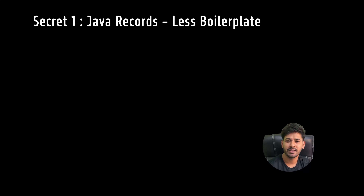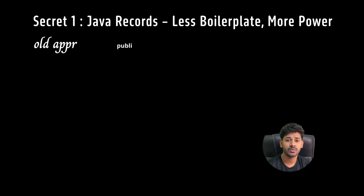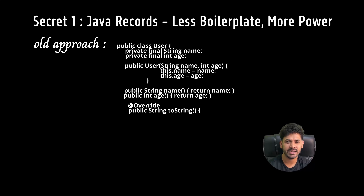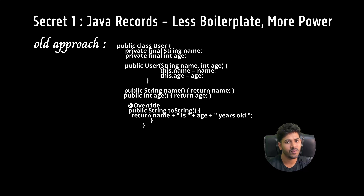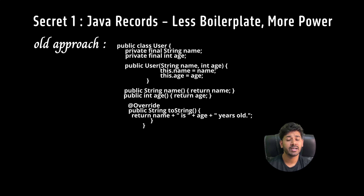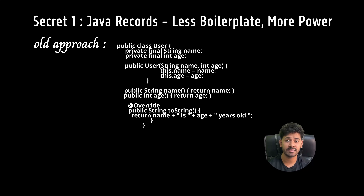Secret one: Java Records. Say goodbye to boilerplate — creating POJOs with getters, setters, constructors, toString, and hashCode is boring. With Java Records we skip all that. Suppose we have a class User with private final name and private int age, and we're creating a constructor, getters, setters, and toString.